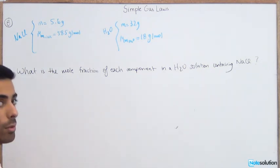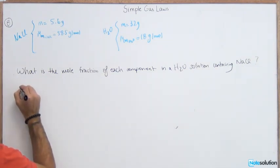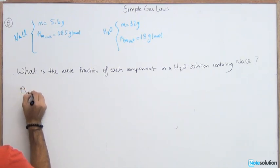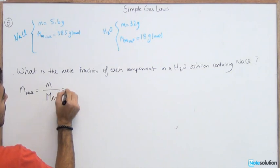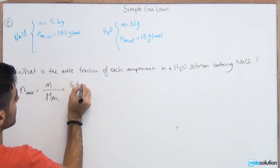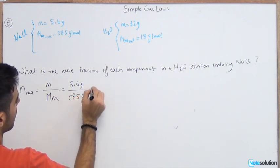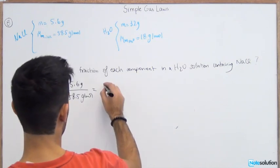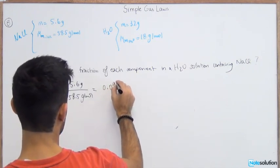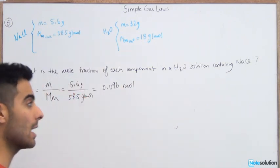In order to find the mole fraction, you need to find the number of moles for each component first. For NaCl, the number of moles is equal to mass over molar mass, which is 5.6 grams over 58.5 grams per mole. That gives you 0.096 moles.